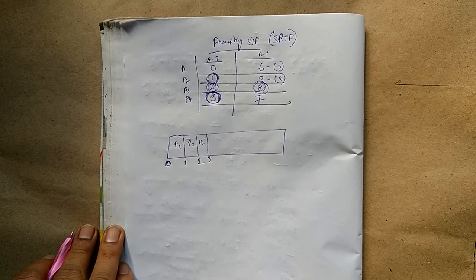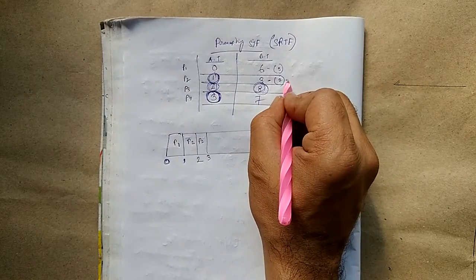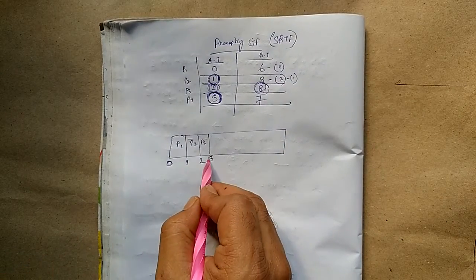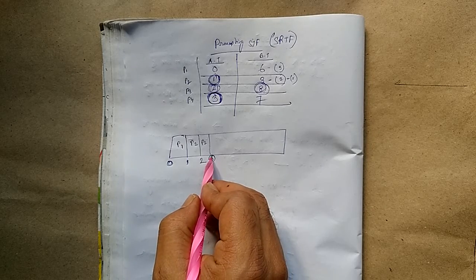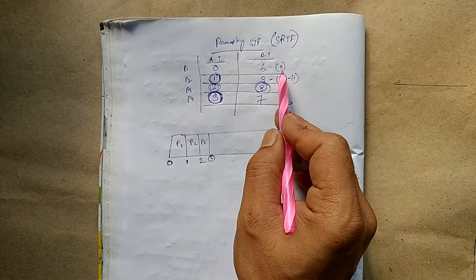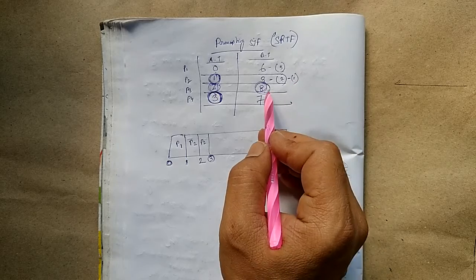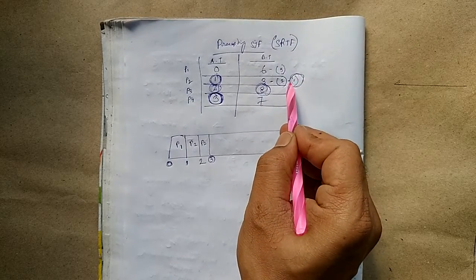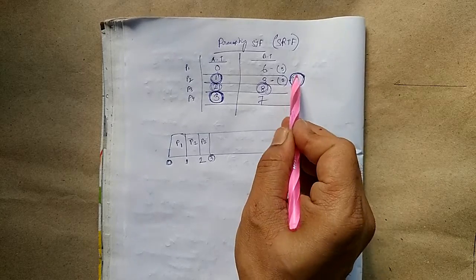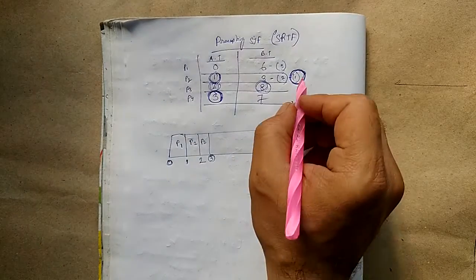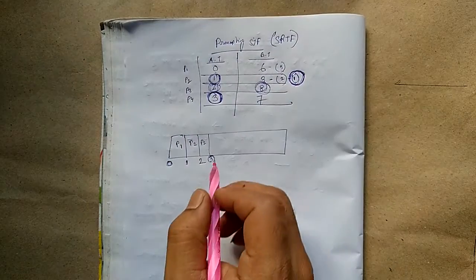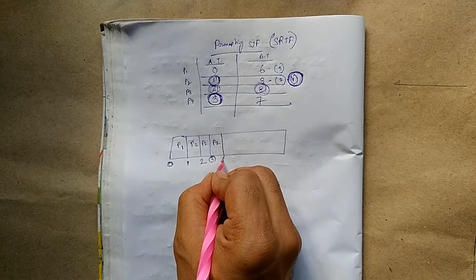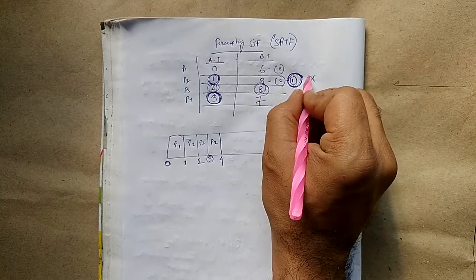When we execute process P2 for 1 second, its remaining burst time will come to 1. Now the clock time is 3. Process P1 burst time is 5, process P2 is 1, process P3 is 8, process P4 is 7. So 1 is the lowest. We will execute process P2, finishing it at time 4.